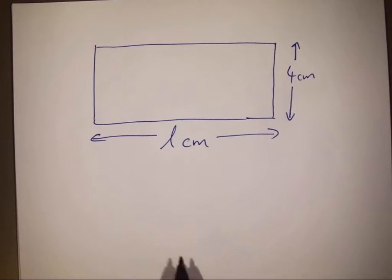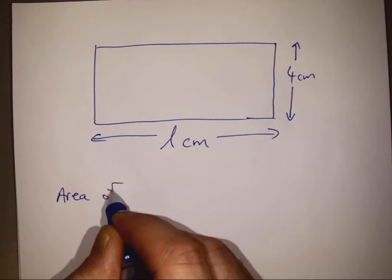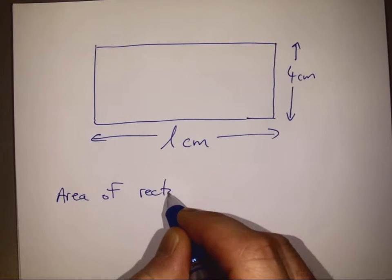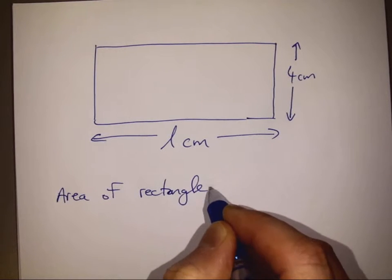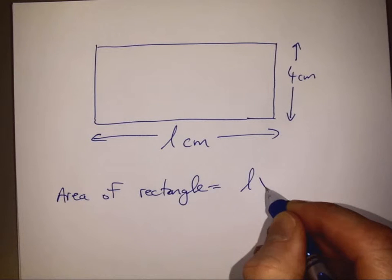Well, first of all, the area of a rectangle under normal circumstances, the area of a rectangle equals the length multiplied by the width.